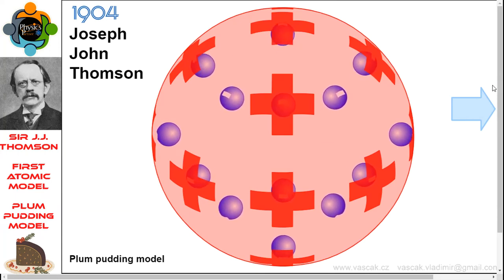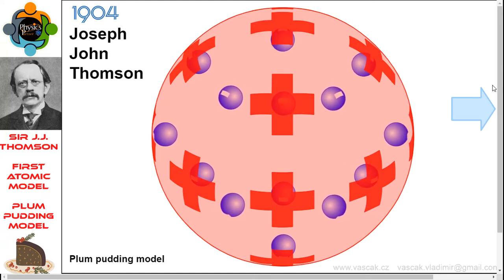to be jelly-like or a thick soup. The electrons were somewhat mobile. As they got closer to the outer portion of the atom, the positive charge in the region was greater than the neighboring negative charges, and the electron would be pulled back more towards the center region of the atom.